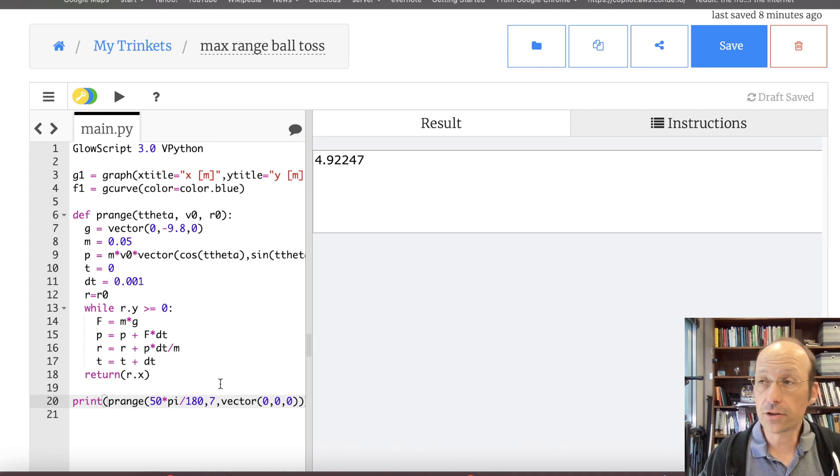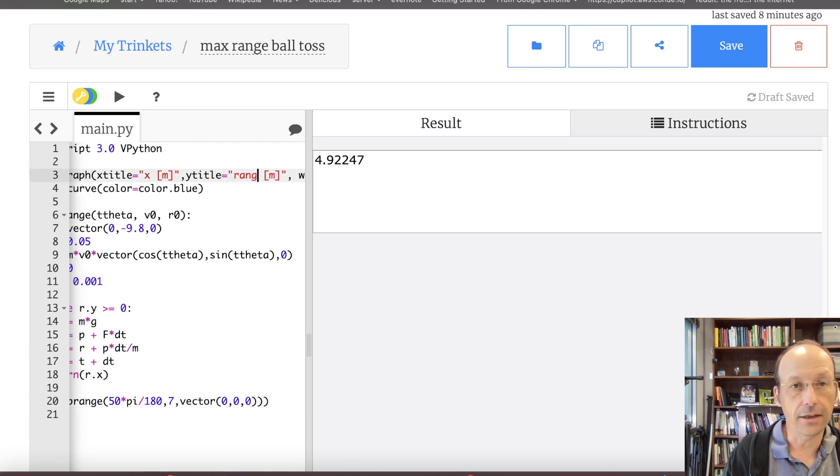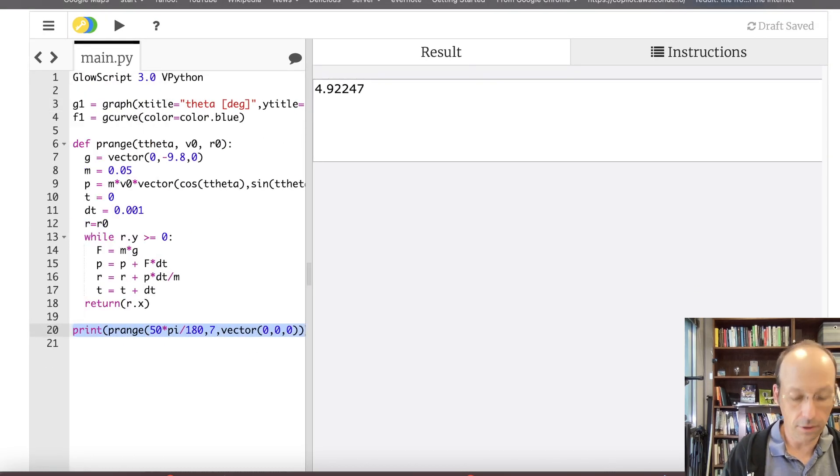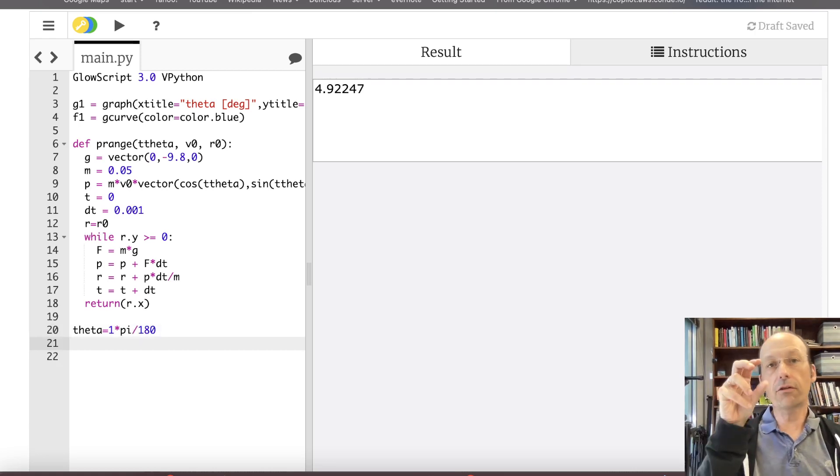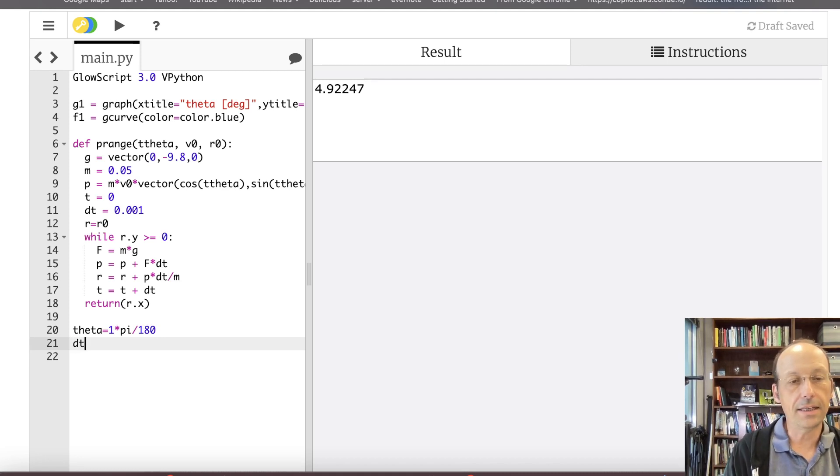So now I can just call my function here. What I want to do now is to make a graph of range versus theta in degrees. So here's what we're going to do. I don't want to say theta is zero. If I launch it completely horizontal, it's not going to go anywhere. So let's say theta equals one degree, one times pi divided by 180. And then I'm going to increase my angle theta by some amount. Let's increase it by a degree. So d_theta equals one times pi divided by 180.